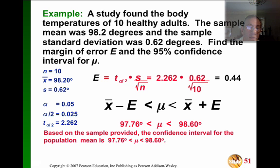Now you simply take that error away from the average or mean. The mean minus this error 0.44 gives you 97.76 degrees and the upper limit of 98.6 when you add the error to the mean. So based on the sample, the confidence interval for the population mean is 97.76 and 98.60.